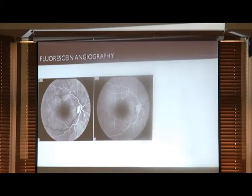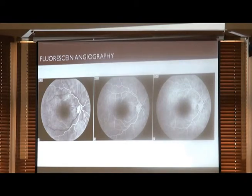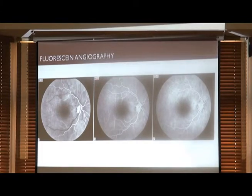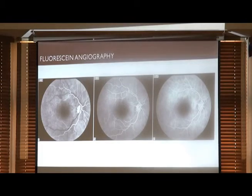Fluorescein angiography is another diagnostic test we use to look at the health of the actual retinal vasculature. A nurse puts an IV in, injects a dye, and through a special camera with special filters the photographer takes a series of pictures as the dye flows through your blood vessels. At 16 seconds the arteries are being filled; at 20 seconds the veins are also visible; and at 41 seconds there's dye in all the blood vessels. This lets us look for leaky blood vessels, abnormal or lack of perfusion, and also diagnose the macular ischemia I mentioned earlier.